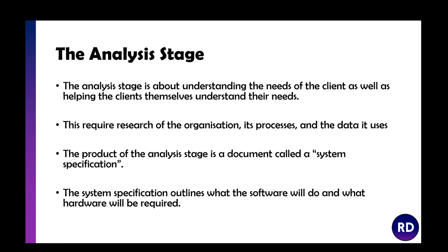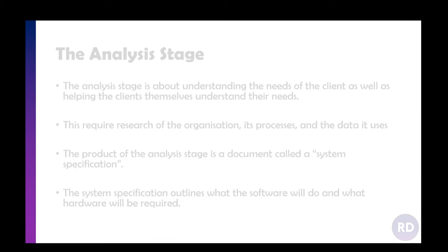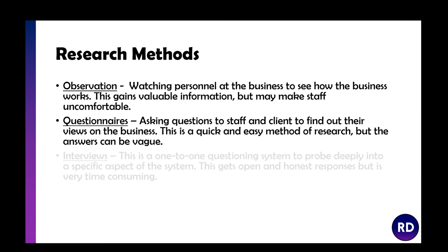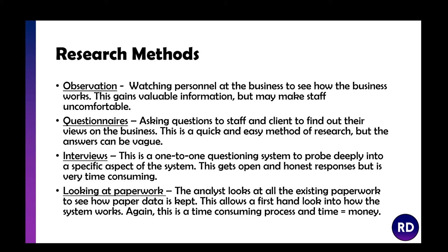The first stage is the analysis stage. This is all about understanding the needs of the client and helping the clients themselves understand what they actually want to achieve with the new system. We need to research the organization, how it works, and how it uses its data. Once we've put together a document called a system specification, it outlines what the software will do and what hardware we actually need. The first thing we need to do is research the business and find out what we actually need to do.